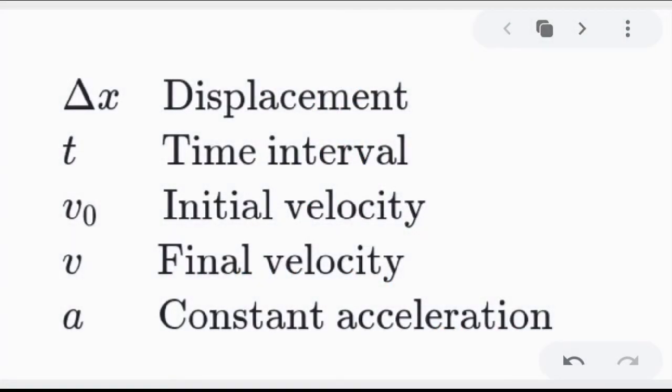We are going to discuss the derivation of the four fundamental equations in kinematics. For us to easily understand those kinematic equations, let's be familiarized with these kinematic variables. We have change in x as the displacement, t as time interval, v sub 0 as initial velocity, v as final velocity, and a as constant acceleration. These kinematic equations work only on constant acceleration — they don't work on motion where acceleration is changing.